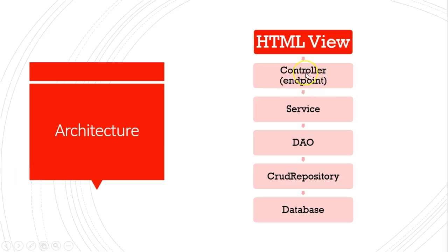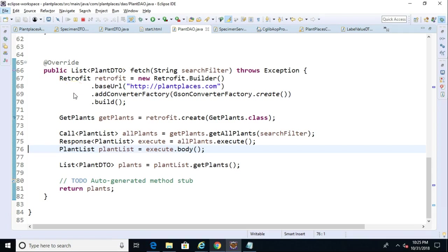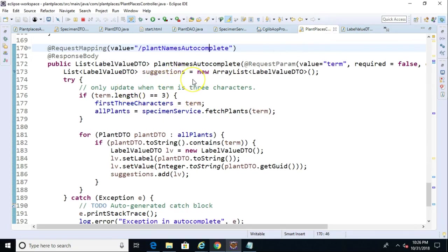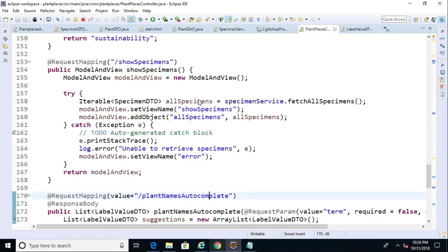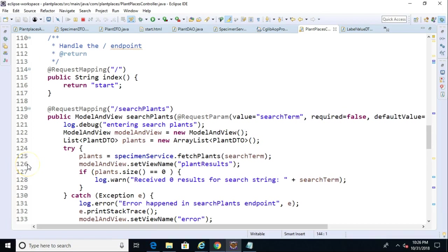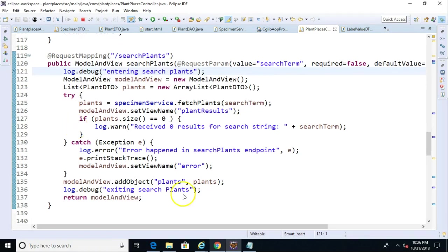I'm going to snap a breakpoint at the controller layer so we can see that the controller is getting hit every time we do a search. I'm also going to snap a breakpoint at the DAO layer so we can see when that gets hit and when it does not. One warning: walking through breakpoints gets trickier going from controller to service because it has to wrap some magic around that service component — we may end up getting into caching classes. I'll set a breakpoint on plantDAO line 72 and on the plant names autocomplete and search plants in the controller.